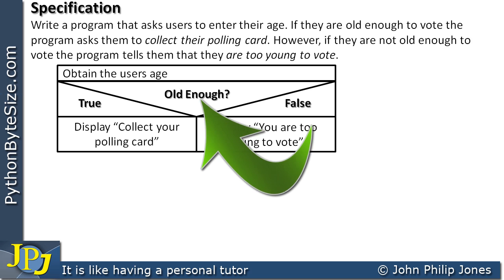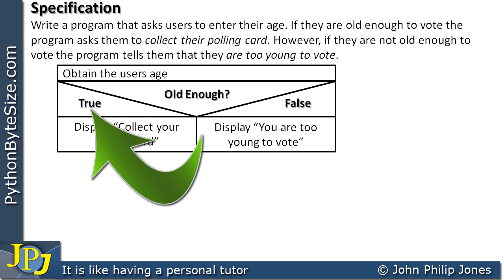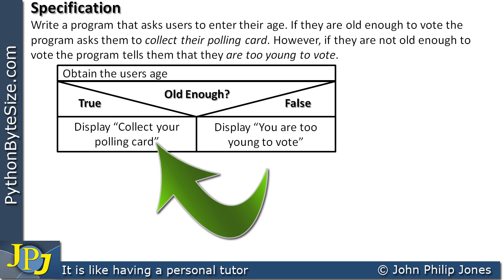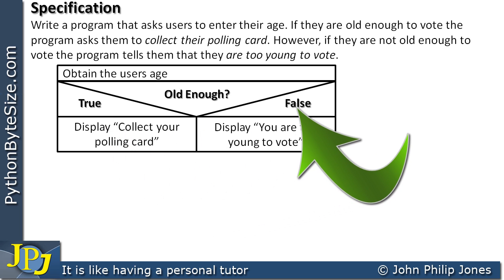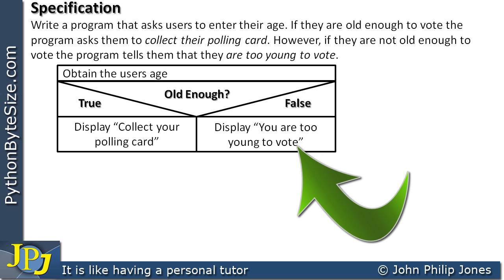When this question is asked — 'old enough?' — it's either true: they are old enough, in which case we tell them to collect their polling card. Or false: they're not old enough, in which case we display 'you are too young to vote.'